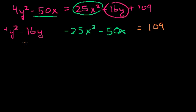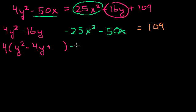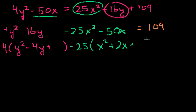Let's complete the square and get it into standard form. The easiest way to complete the square is if you have a coefficient of 1 on the y squared or x squared term. So let's factor out a 4: you get 4 times (y squared minus 4y), and then minus 25 times (x squared plus 2x). I'm going to add something later when I complete the square — those additions are what make these perfect squares.